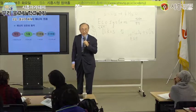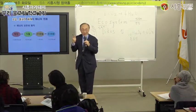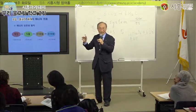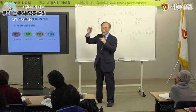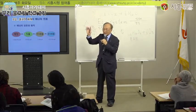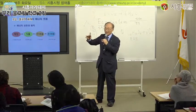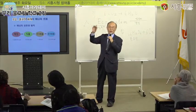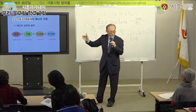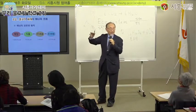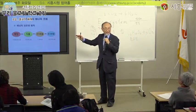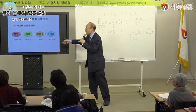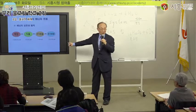에너지의 흐름이란 말이 이해가 됩니까? 거꾸로는 못 갑니다. 반드시 태양에서 생산자인 식물로, 그 다음에 초식동물로, 육식동물로 이렇게 지나갑니다. 사람도 이걸 이용하고 있습니다.